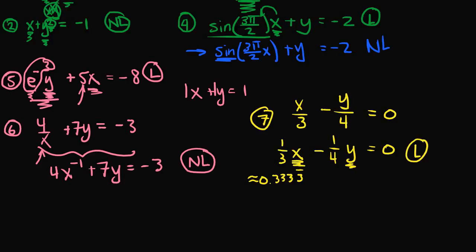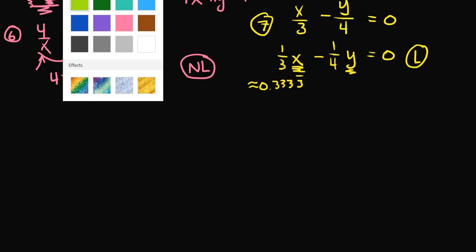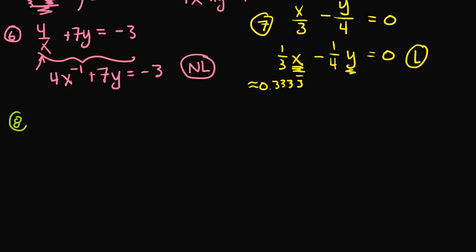For our last three examples, I'll use lime green. Example 8: 2 sine x minus y is equal to 7. We have two variables, x and y. They aren't multiplied with each other and are only raised to the 1st power, but x is part of the sine function — a trigonometric function. Because x is involved in a trigonometric function, this makes the equation nonlinear.